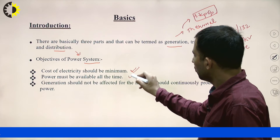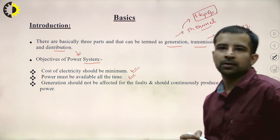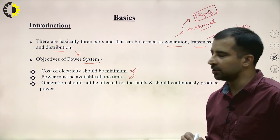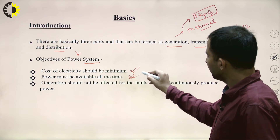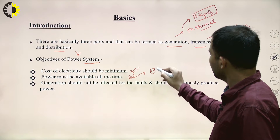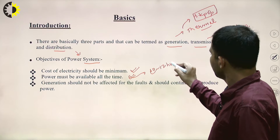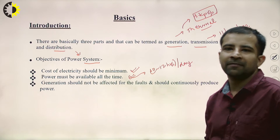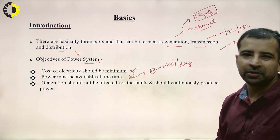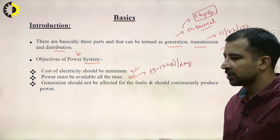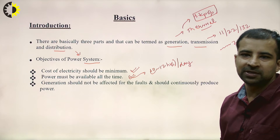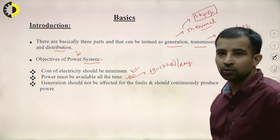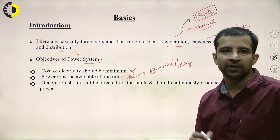Second, power must be available all the time. As a consumer, you expect electricity to be available 24 hours a day. It must not happen that power is available for only 10, 12, or 20 hours per day — we want electricity available continuously.